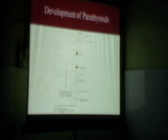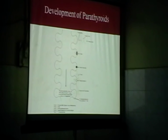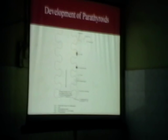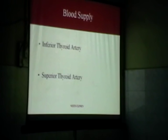From embryological development - third arch and fourth arch. The fourth arch is the same as the main thyroid, so it stays with the gland. The third is the same as the thymus, so it descends in the superior mediastinum for a variable distance. Therefore the relationship between the thyroid and the superior parathyroid is constant, whereas the relationship between the thyroid and the inferior parathyroid is variable.